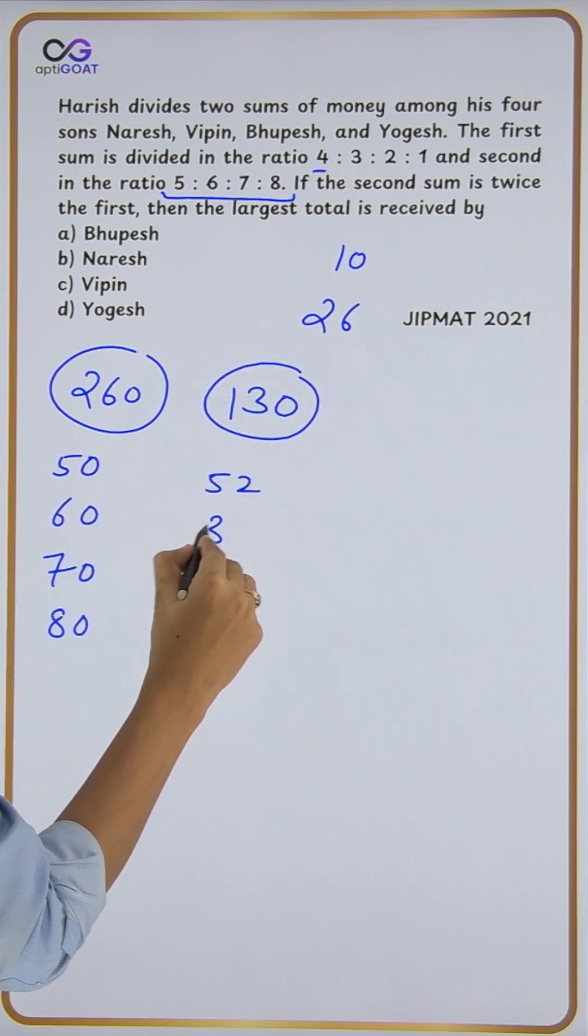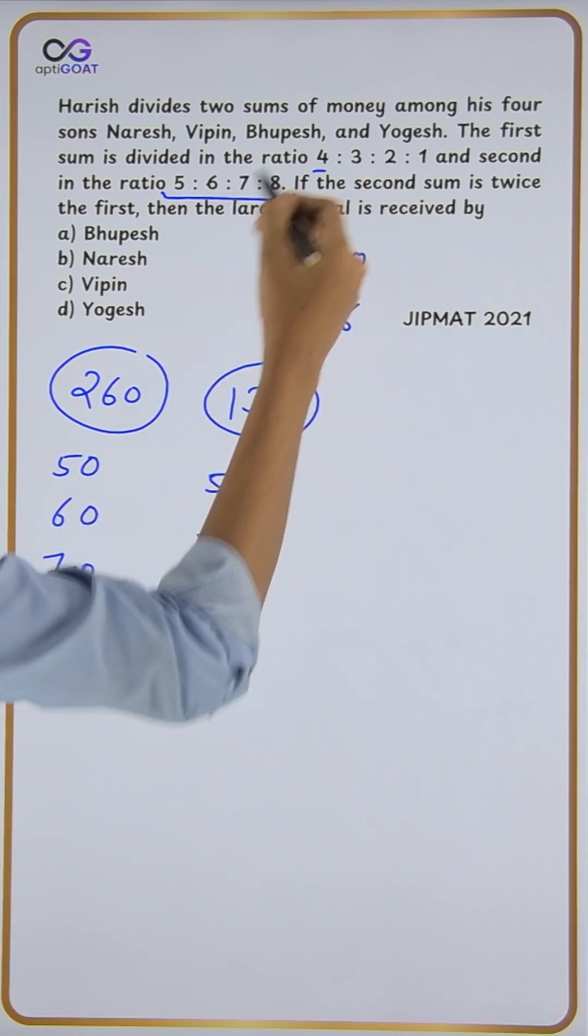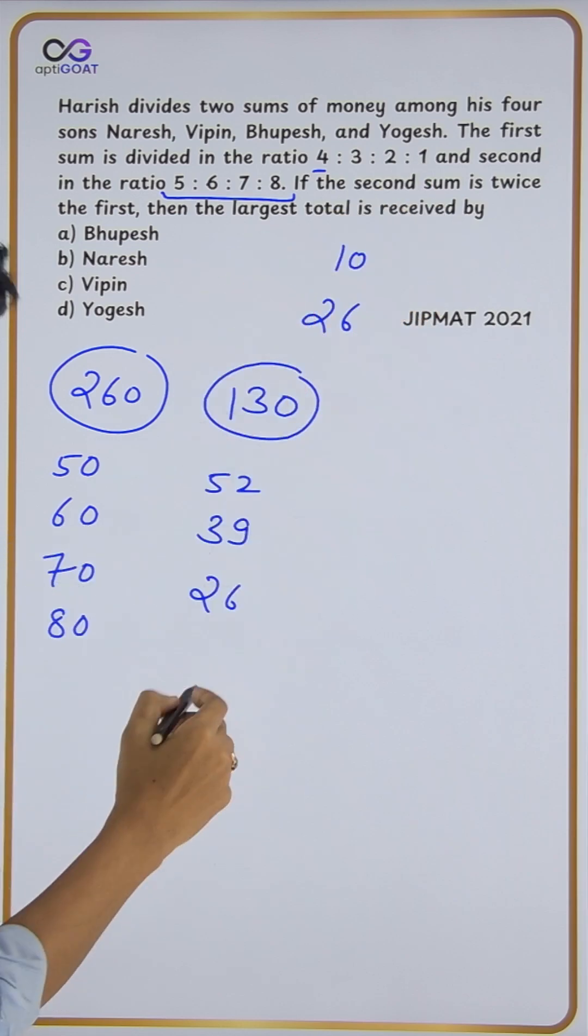30% of 130 is 39, 20% of 130 is 26, and 10% of 130 is 13.